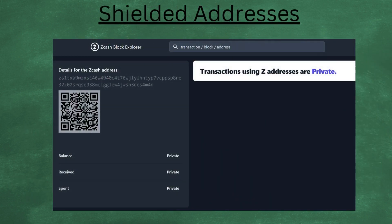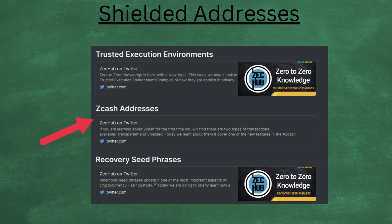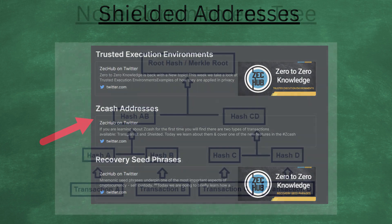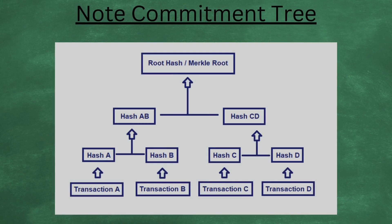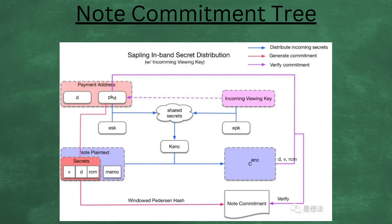Shielded transactions occur between shielded addresses. Zcash is sent between shielded addresses using a QR code in the same way as Bitcoin, Ethereum, Monero, and Litecoin. As part of the Zero to Zero Knowledge series, we created a Twitter thread, and it explains how a seed phrase is generated and how that eventually becomes a Zcash address inside your wallet. Highly recommend it — I'll put a link in the description. In an earlier video, we explained how the inputs and outputs in Bitcoin transactions form a Merkle tree. Zcash instead uses a note commitment tree, which stores the encrypted notes generated with transactions.